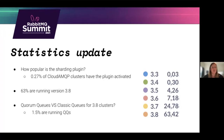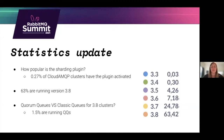Last time CloudAMQP had a talk at the summit, Anders and Lovisa showed some RabbitMQ statistics from all our clusters. We wanted to give a quick update: one question was about the sharding plugin. For CloudAMQP users, only 0.27% have it activated. Looking at RabbitMQ major version distribution, a majority of clusters are running 3.8. But looking at quorum queue usage, not a lot of CloudAMQP clusters are running quorum queues — so there's definitely room for customers to adopt them.